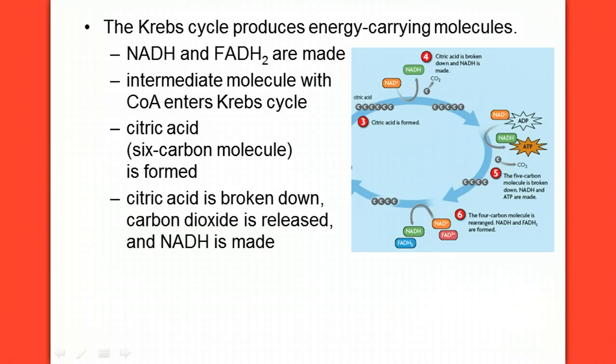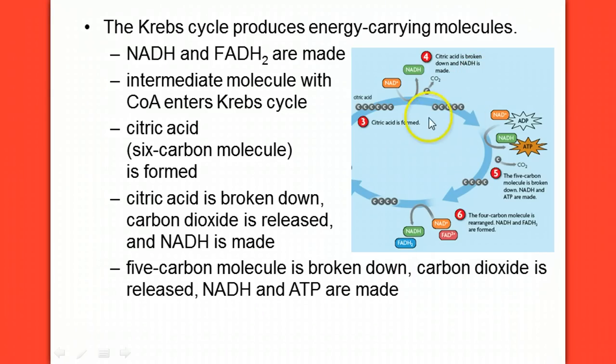The citric acid then gets broken down, releasing carbon dioxide, so we're ripping off a carbon. We're going from six to five, and NADH is made. Then when we continue, that five carbon compound is broken down. We're going to rip one of those carbons off again, releasing carbon dioxide, and this time we make NADH and an ATP.